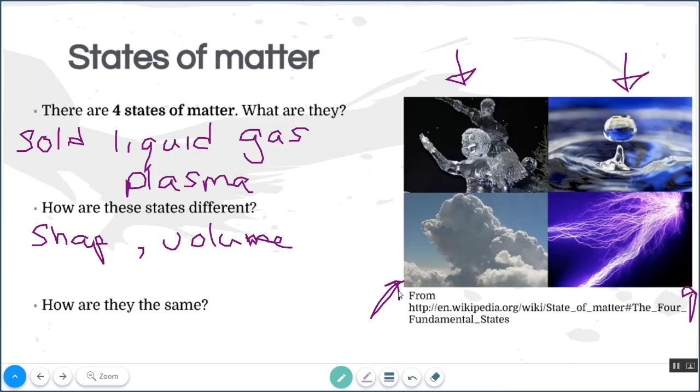These states are different because some of them have a particular shape and some of them don't. Some of them have a particular volume and others can take on whatever volume you allow them to have, whatever volume the container has. These things are all the same in one crucial way. They're all the same because they're all water. So they're all different forms of the compound water, which means they're all made out of matter. So it's the same chemical, which is a kind of matter.